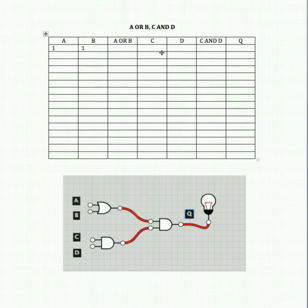Let's first turn all of our inputs ON. If A or B are ON, that gives us an output of 1. If C and D are ON, that gives us an output of 1. That's two positive inputs going into our final AND gate, so that gives us a final output of 1.